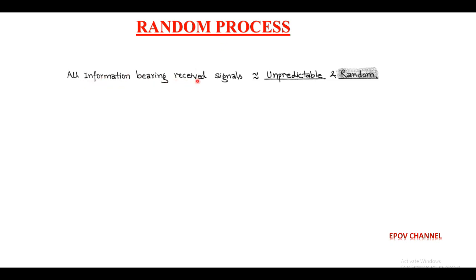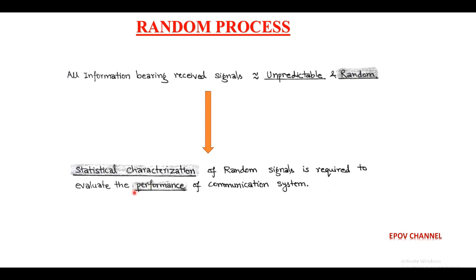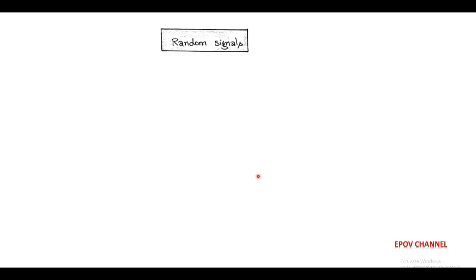Here, all the information-bearing received signals are random and unpredictable. So, in order to evaluate the performance of the communication system, there is a requirement of statistical characterization of received random signal. The random signal is a function of time and bears three characteristics which are collectively called as random process.